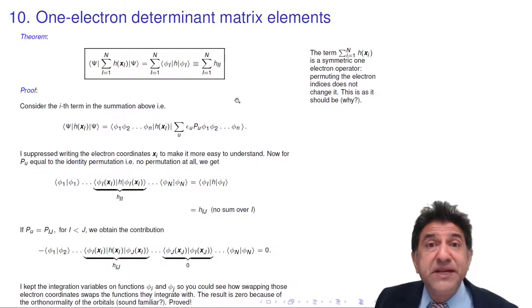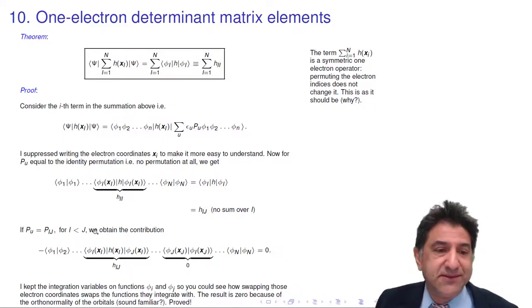It would be proved if all the remaining ones were zero. And you can see what's going to happen, can't you? It's like the overlap. Let's consider the case when pu is a swap of two electrons, for example swapping i and j. In that case, we saw what happened before.